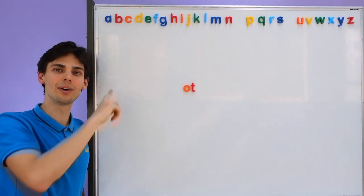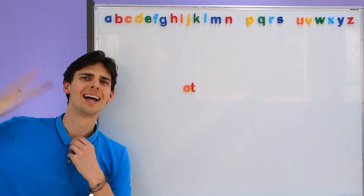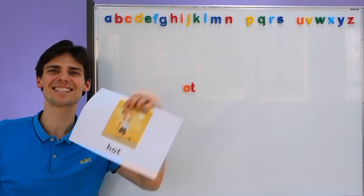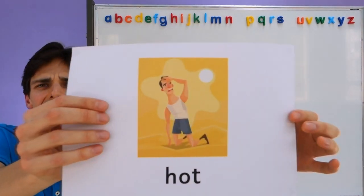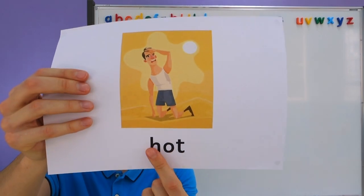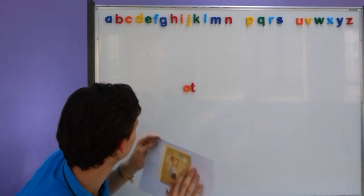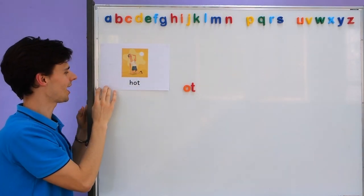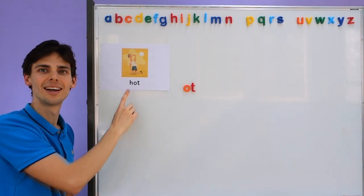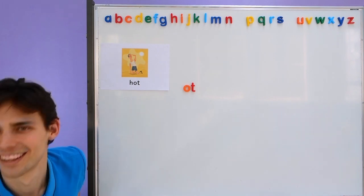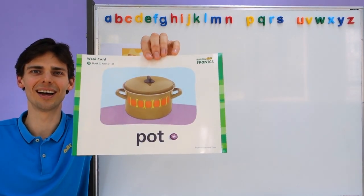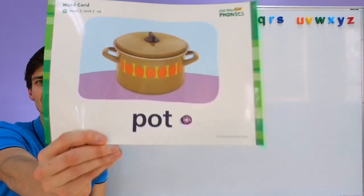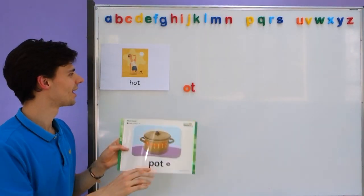Let me teach you the "-ot" words we're learning today. The first word is hot. It's so hot. The man is very hot. Hot. So we have hot, and do you know what is this one? This is a pot. Sometimes you have hot pot. This is just the pot. Pot.